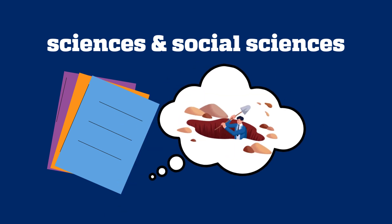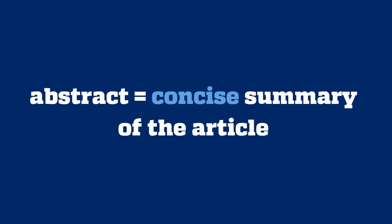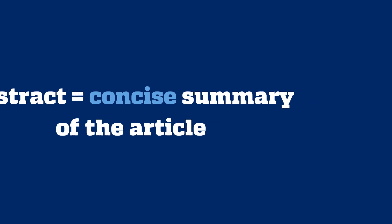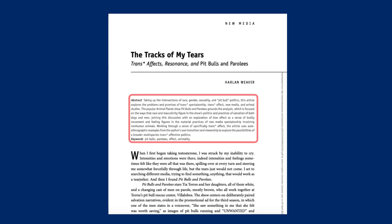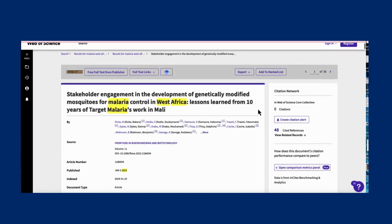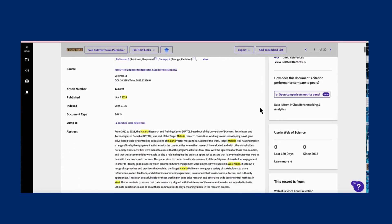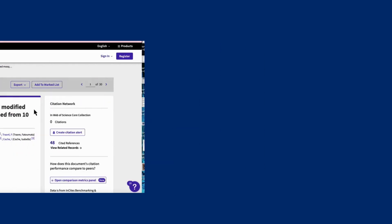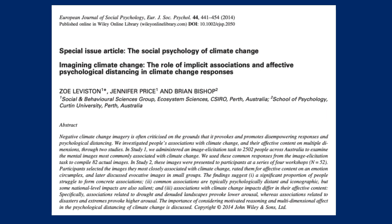So let's dig into them. An abstract is a concise summary of the article, including its purpose, main argument, as well as the implications of that argument. Sometimes the abstract will appear at the top of the article, and sometimes you'll find it in the database you're searching. Abstracts can be really helpful for your research. Look at this one from a journal of social psychology — it not only talks about the main purpose of the article, but also addresses their methodology and the implications of the research.